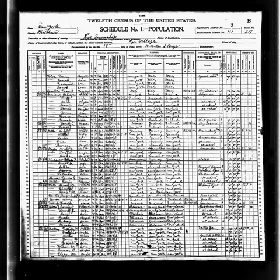The Twelfth United States Census, conducted by the Census Office on June 1, 1900, determined the resident population of the United States to be 76,212,168, an increase of 21.0% over the 62,979,766 persons enumerated during the 1890 census.